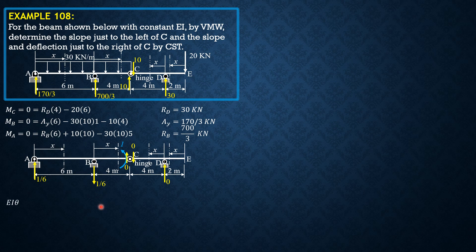Now applying the virtual work method: EI·θ_C-left equals the integral from 0 to 6 of (170/3·x minus 30·x·(x/2) — which is minus 15x²) times the virtual moment at that section, which is x/6.